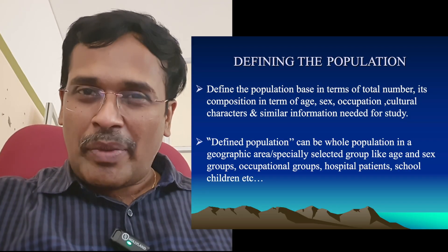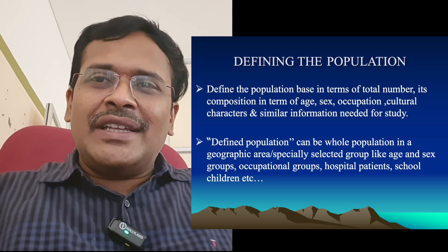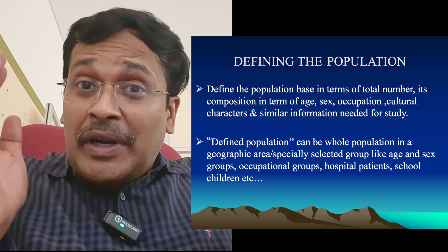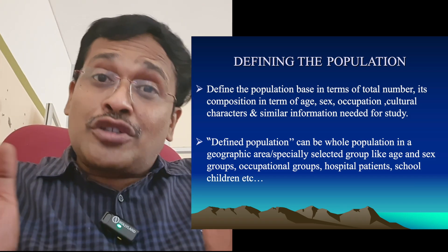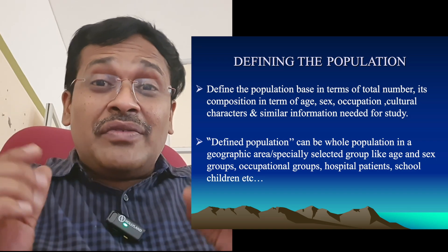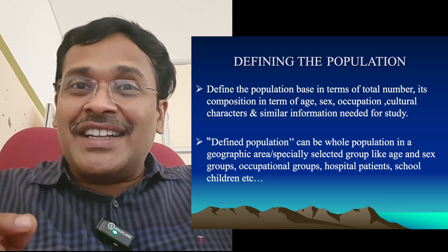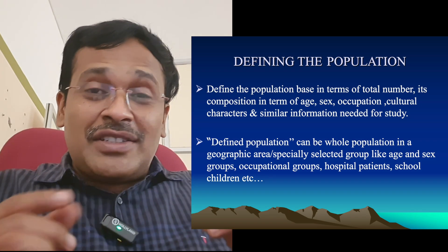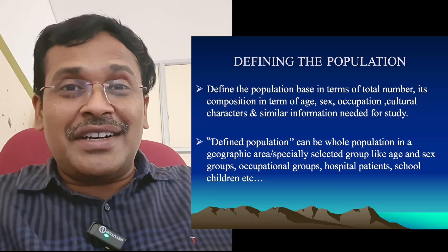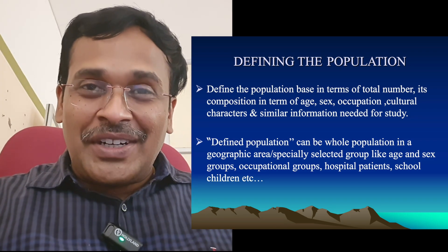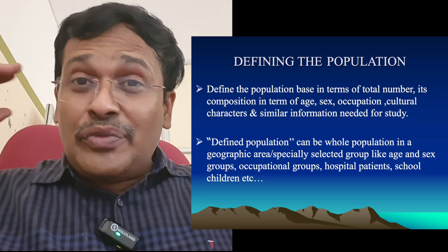Now we will deal with these one by one. First, defining the population. What is this population group? It can be anything — a particular age group, particularly male gender, certain occupational group working in a factory, school children, or small communities. Wherever we are able to count accurately the total number of people in that area, they form a defined population. The defined means you know each and every person. It can be endless, but the number needs to be particularly very high.